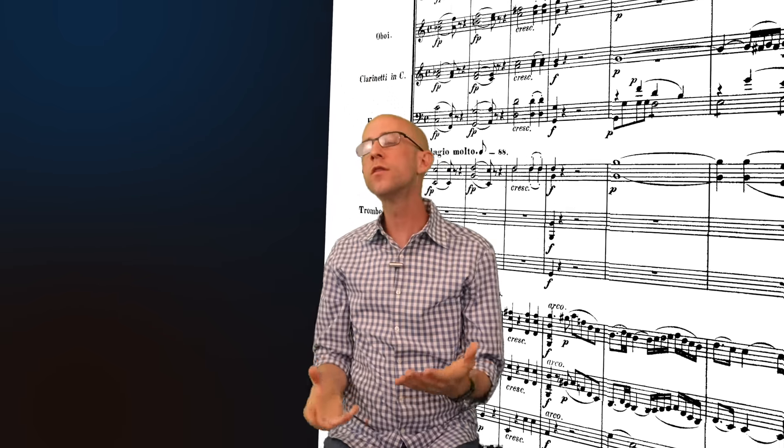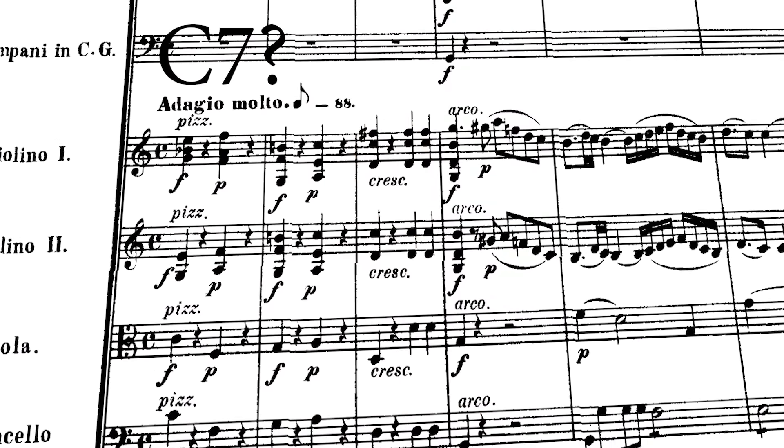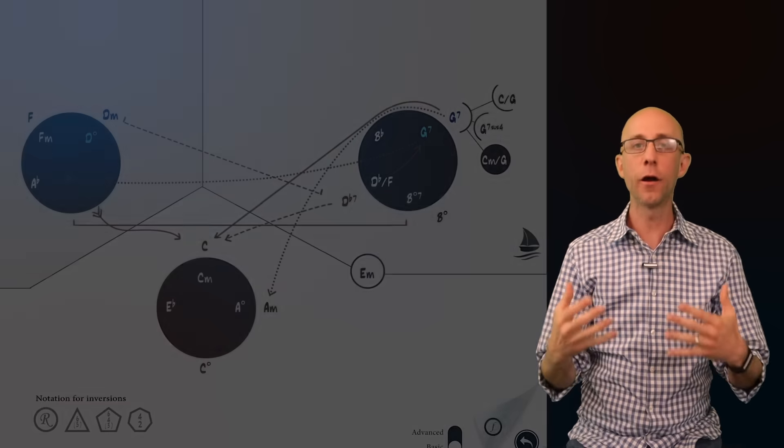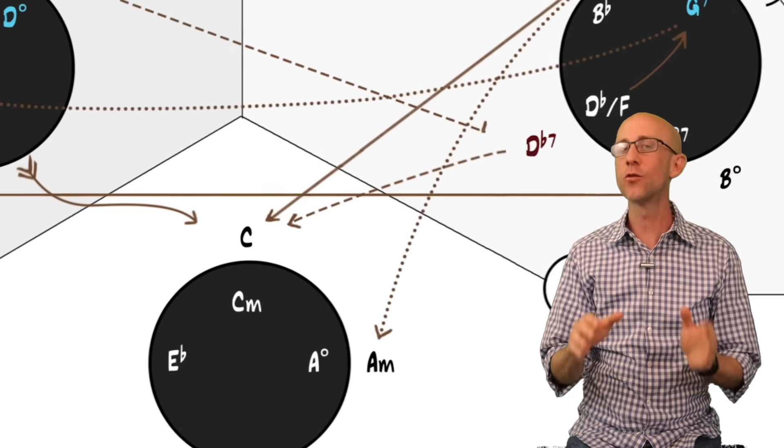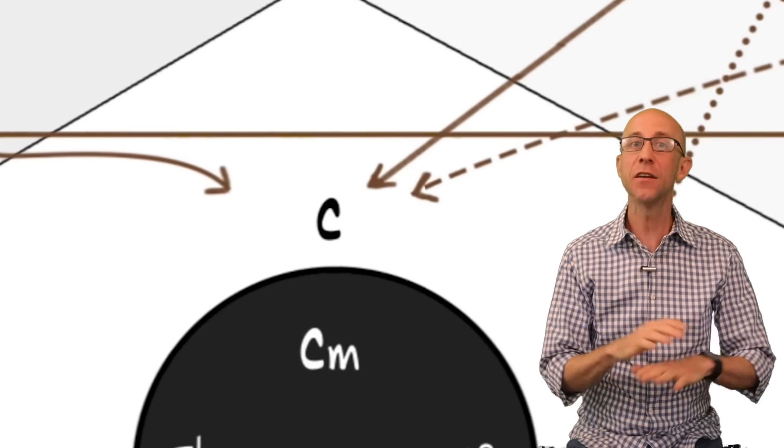He starts his symphony not on the one, but on a weird 1-7? Okay, so to see what's going on, let's look at the map in C from our guide. C is a regular triad, not a dominant chord.